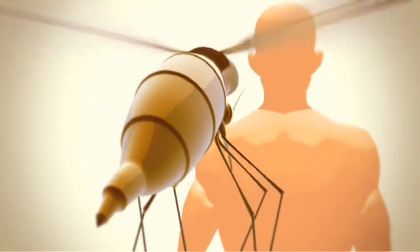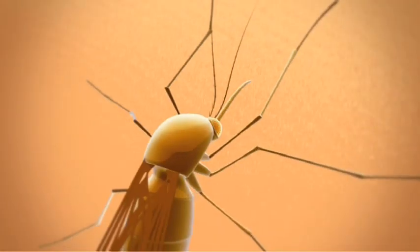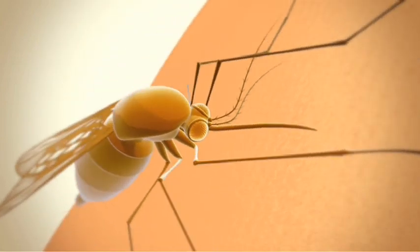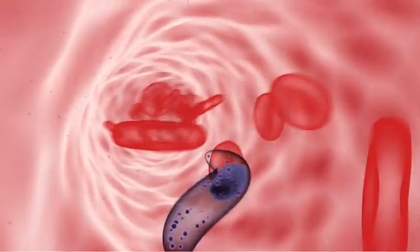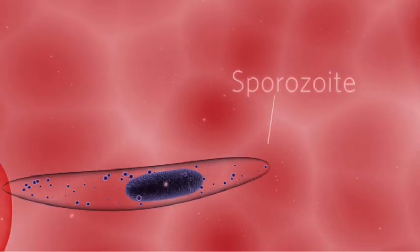The malaria parasite's life cycle is very complex, involving many stages. As the mosquito feeds, malaria sporozoites enter into the human bloodstream.